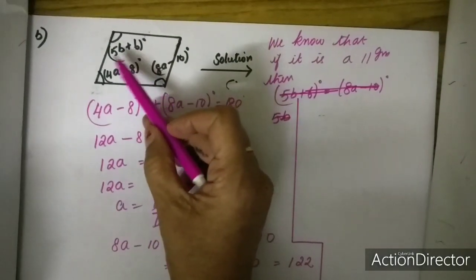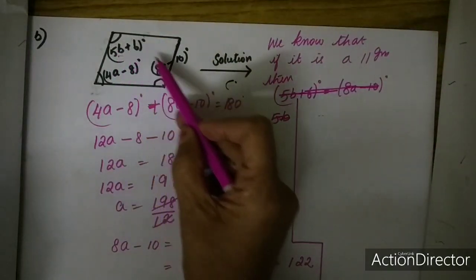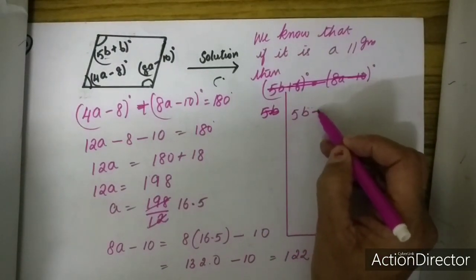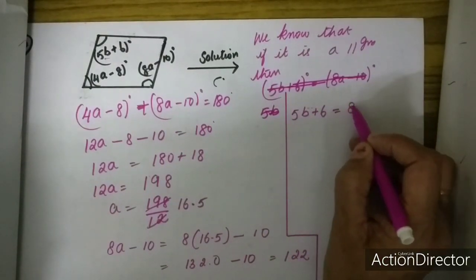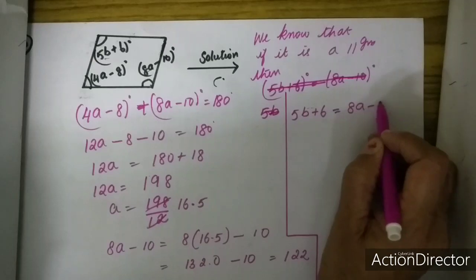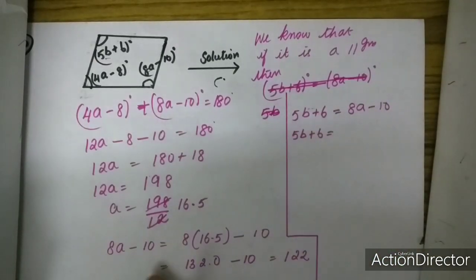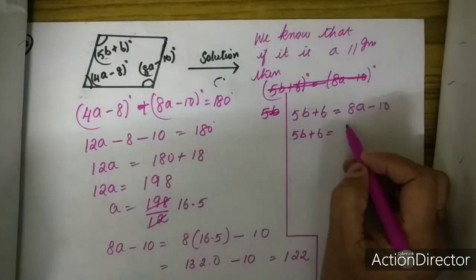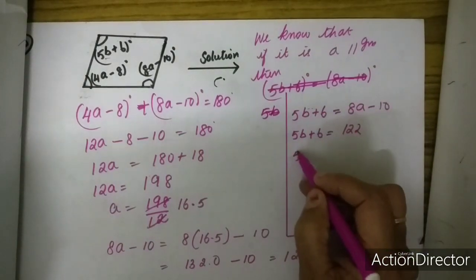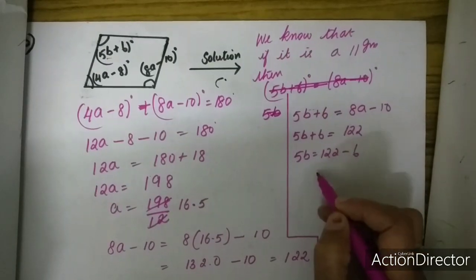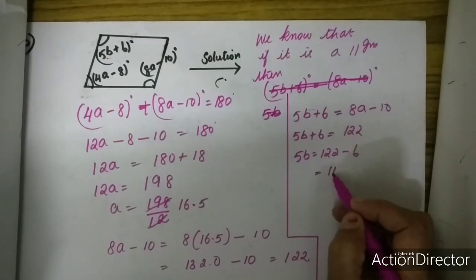Now for finding the value of B, I will be using opposite angles are equal. So we know that 5B plus 6 is equal to 8A minus 10. So 5B plus 6 is equal to 122, which means 5B is equal to 122 minus 6, which is equal to 116.